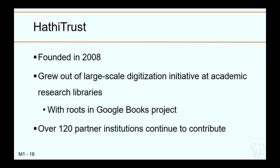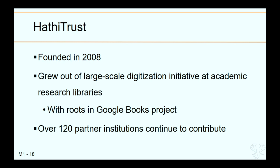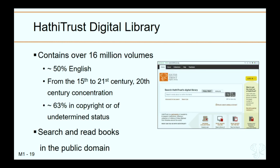HathiTrust was founded in 2008 as a community of research libraries committed to the long-term curation and availability of the cultural record. It's an offshoot of the Google Book Project, and most of the digitization has happened at academic libraries. Currently there are over 120 partner institutions continuing to contribute digitized material. The HathiTrust Digital Library is concerned with collecting, preserving, and providing access to content from partner institutions. It currently has over 60 million volumes, about half in English, with material going back to the 15th century, though the majority is from the 20th century.